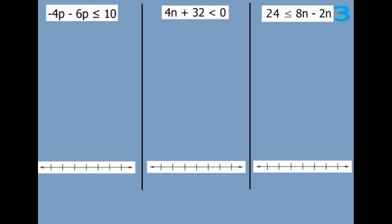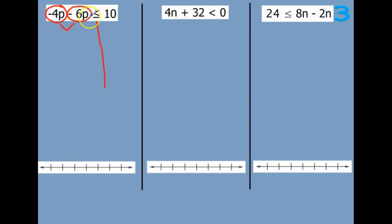Here's a couple more we need to solve. I'm going to draw my line down. But I notice I have a negative 4p and a negative 6p — we can combine our like terms. A negative 4 and a negative 6 are all negative — same sign, add and keep — it's a negative 10p, less than or equal to 10.